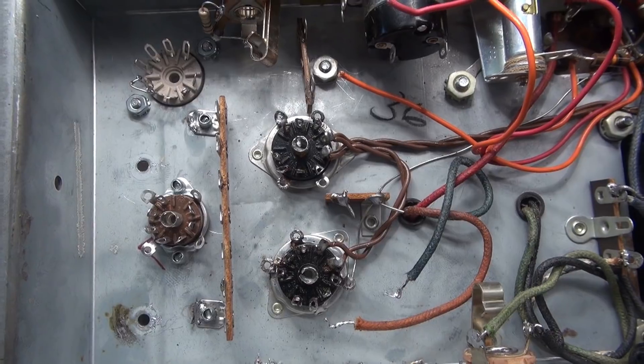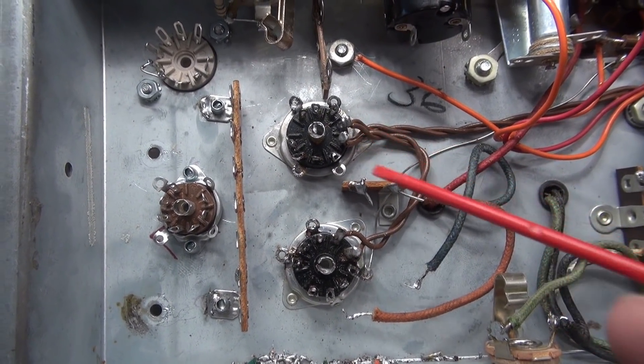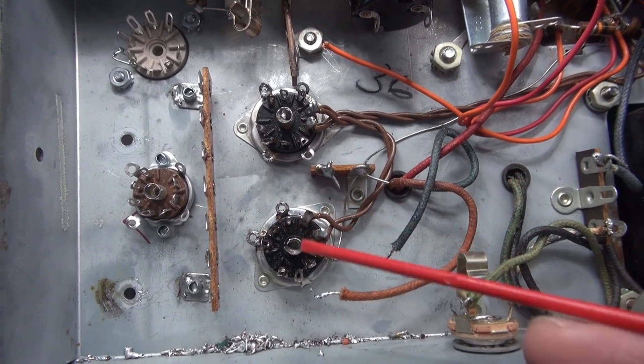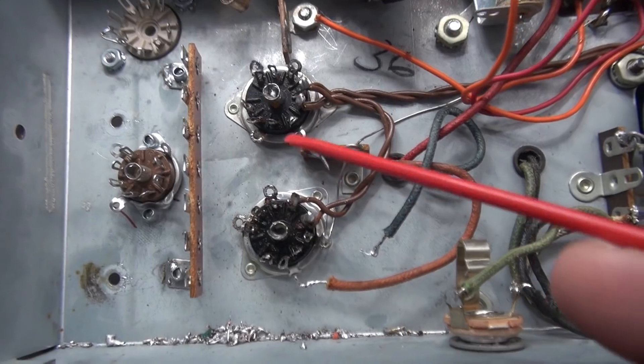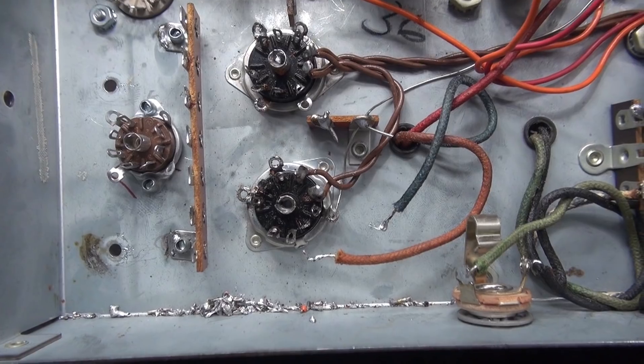So for the conversion to the 6BQ5s, pretty much every pin was wrong except for the filament lines. So I pretty much had to strip off all the wiring, clean the tube pins. You can see my shrapnel down here. Time to rewire it.